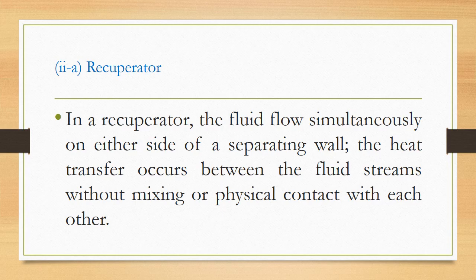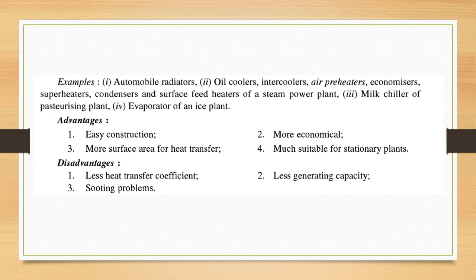For indirect contact, the first type is the recuperator. In a recuperator, the fluids flow simultaneously on either side of a separating wall. Heat transfer occurs between the fluid streams without mixing or physical contact with each other. Examples of recuperators include automobile radiators, oil coolers, intercoolers, air preheaters, economizers, superheaters, condensers, surface feed heaters of a steam power plant, milk chillers of a pasteurizing plant, and evaporators of an ice plant.